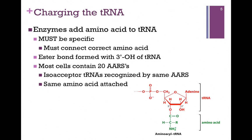The enzymes that attach the amino acid to the tRNA must be very specific. In other words, we have to make sure we're connecting the correct amino acid to the right tRNA molecule; otherwise the correct tRNA will base pair with the codon but will include the wrong amino acid, and our protein sequence will be wrong. There is an ester bond that forms between the three-prime OH of the tRNA and the alpha-carboxy group of the amino acid. Most cells contain 20 aminoacyl tRNA synthetases — one for each of the 20 common amino acids — so that isoacceptor tRNAs are recognized by the same enzyme. In other words, they have different anticodons but we're attaching the same amino acid, so we use the same enzyme.